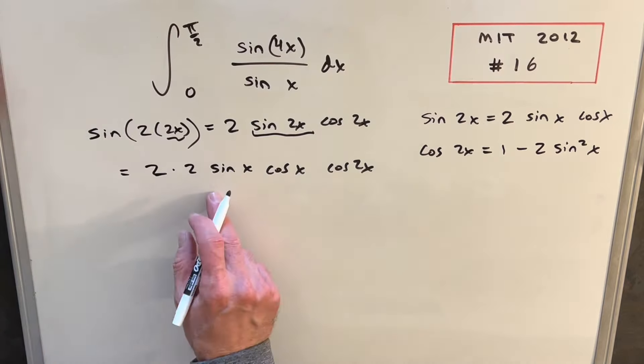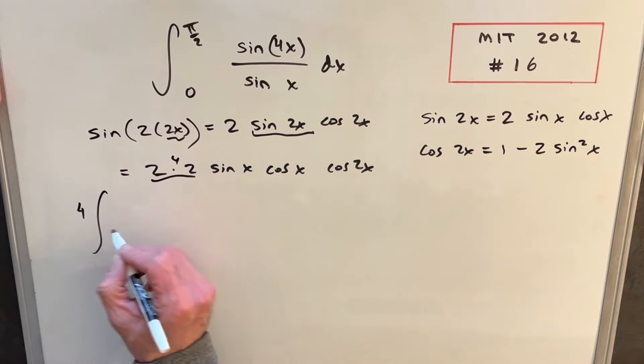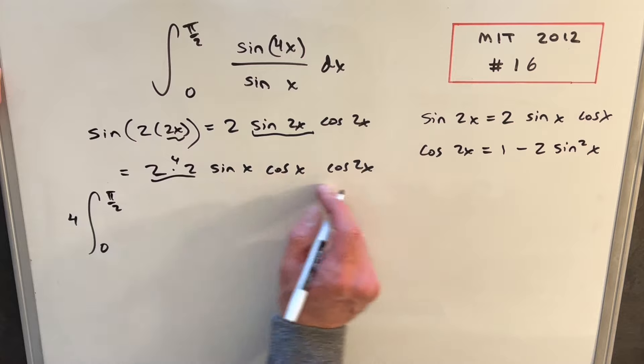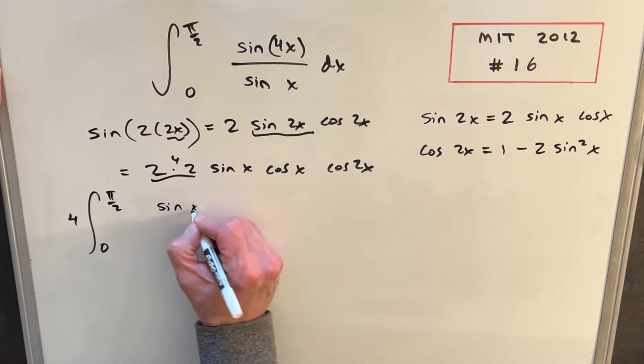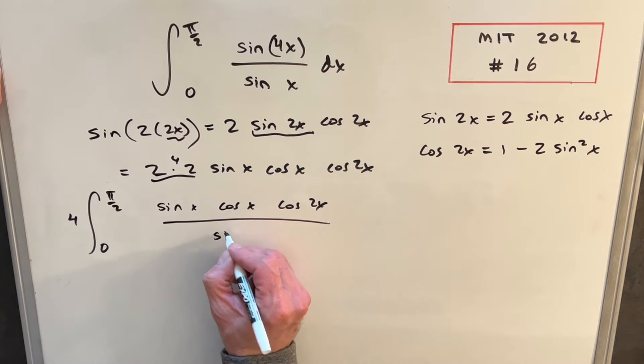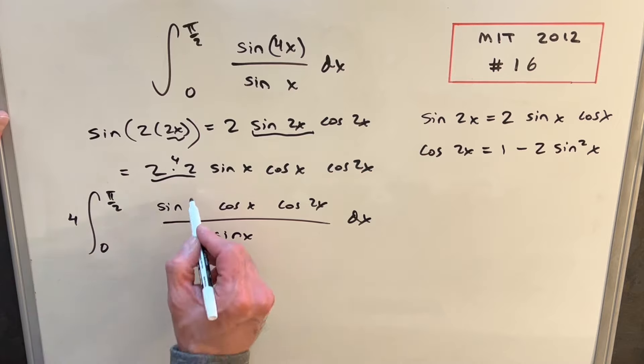And now what I'll do is I'll rewrite the integral, writing sine to the 4x in this form here. But first this is a 4, so we'll take a 4 out front of the integral. We'll keep our bounds as they are for now. So then rewriting, we're going to have sine x cos x cos 2x over sine x dx. Well, the sines are going to cancel right here to simplify this.